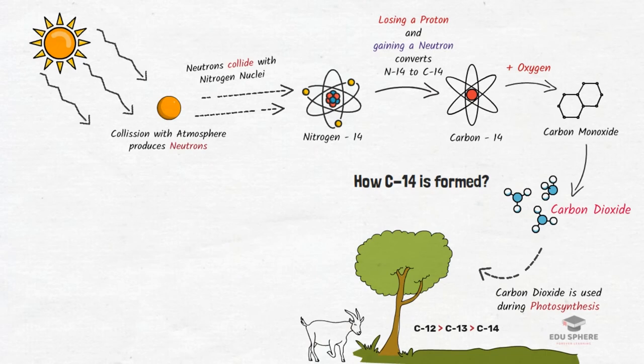And since animals eat plant, their isotopic ratios would be similar to the plants. In this way, the carbon-14 enters into the food chain of animals and finally to the humans.